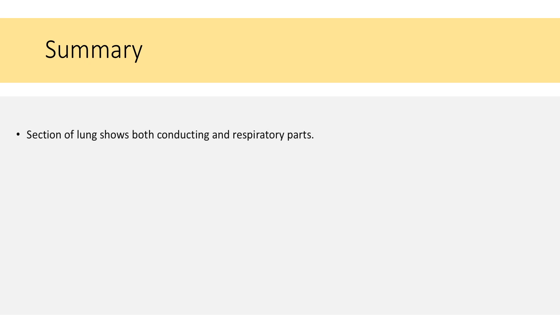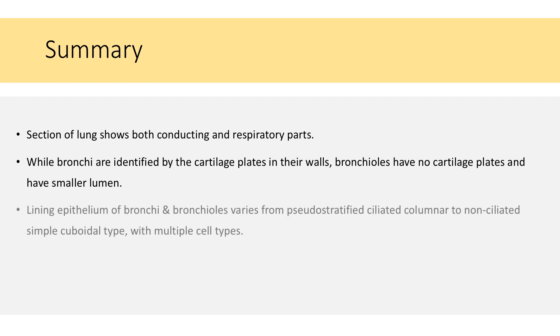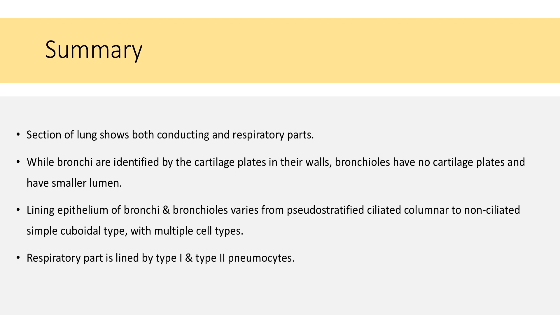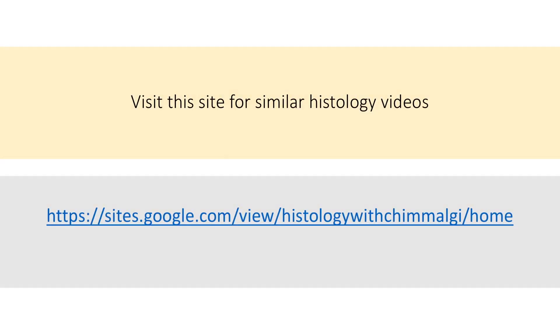In summary, sections of lung show both conducting and respiratory parts. Bronchi are identified by cartilage plates in their walls, while bronchioles have no cartilage plates and have a smaller lumen. The lining epithelium of bronchi and bronchioles varies from pseudostratified ciliated columnar to non-ciliated simple cuboidal type with multiple cell types. The respiratory part is lined by Type 1 and Type 2 pneumocytes. Between the alveolus and the capillary in the interalveolar septum, gases must diffuse across the blood-air barrier. Thank you — hope you find this video useful. You can also visit this site for similar histology videos.